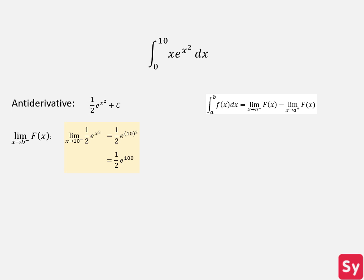Next, we find the limit as x approaches 0 from the right of the antiderivative. We plug 0 into the antiderivative and simplify, getting one half. Now we plug these values into the equation, and this is our answer.